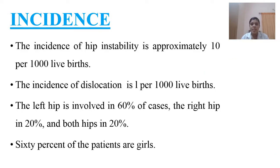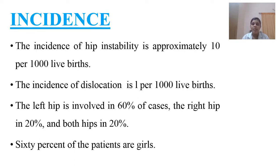Regarding incidence, hip instability is seen in approximately 10 per 1000 live births, while dislocation occurs in 1 in 1000 live births. 60% of cases occur in female children. The left hip is involved in 60% of cases, the right hip in 20%, and both hips in 20% of cases. The disease is most commonly seen among female children.